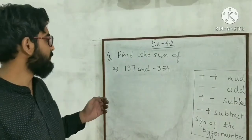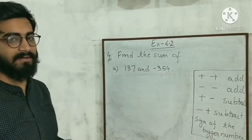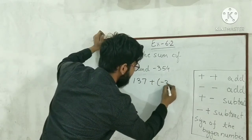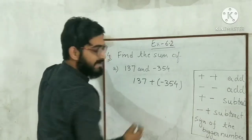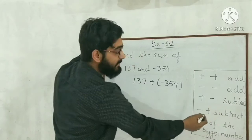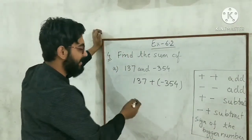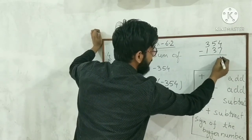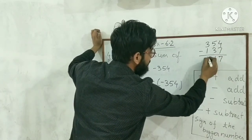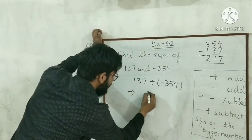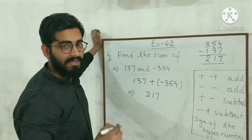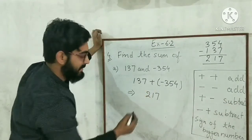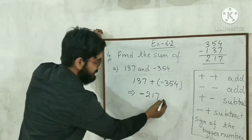Question 4: find the sum of 137 and minus 354. One is positive and one is negative, so subtract and put the sign of the bigger number. 354 minus 137 equals 217. The bigger number is 354 which is negative. So the answer is minus 217.